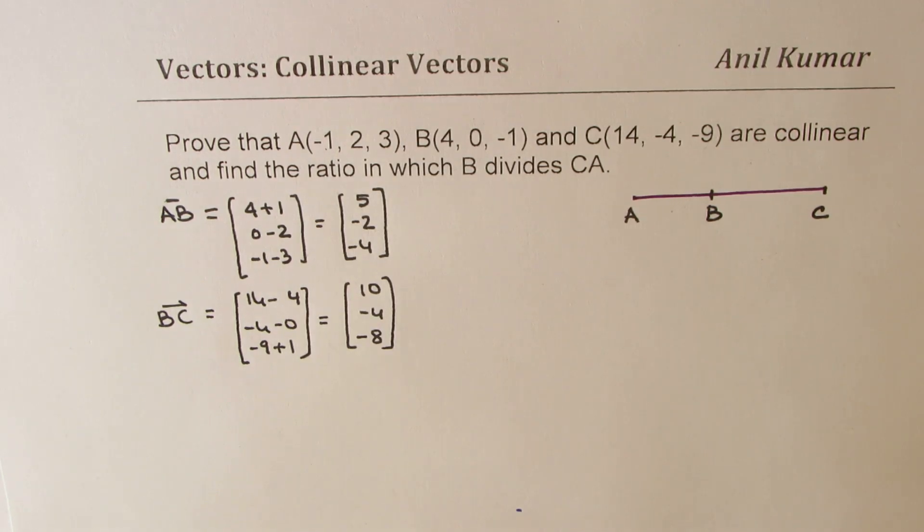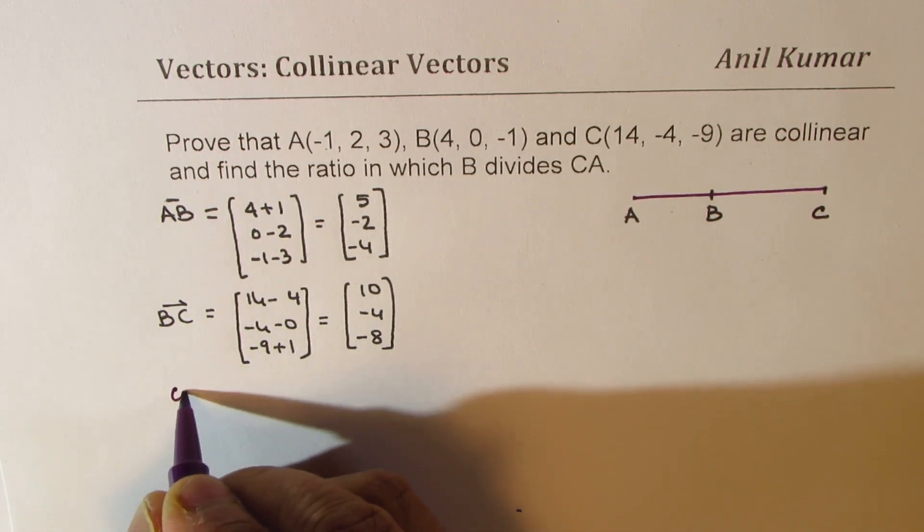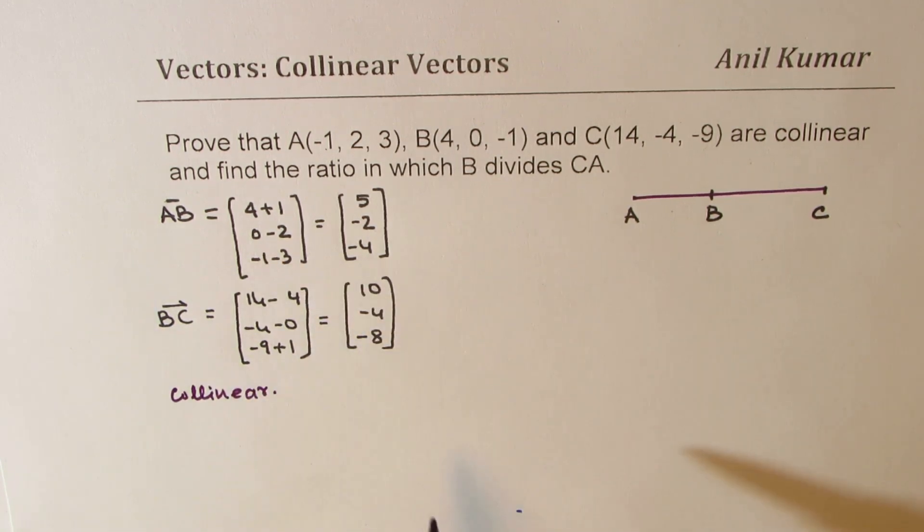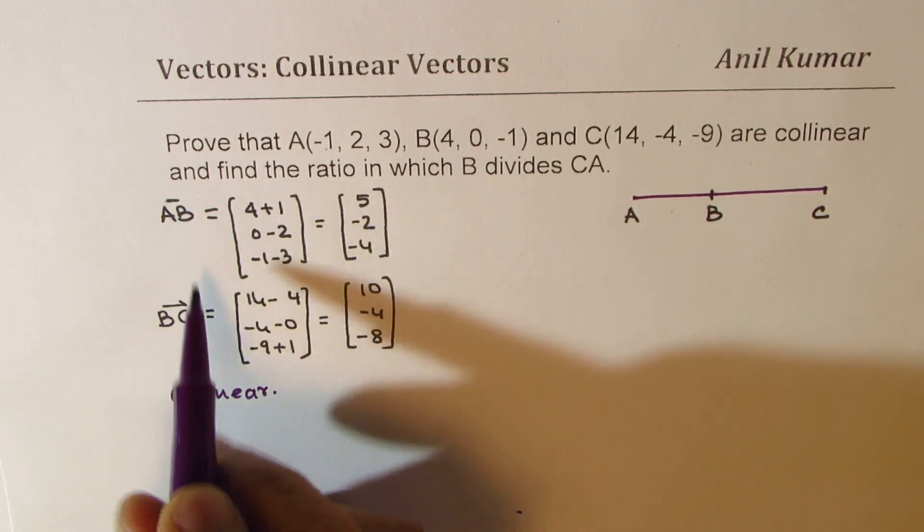So these are the vectors AB and BC. For these vectors to be collinear, what is the condition? That means we could have scalar multiple.